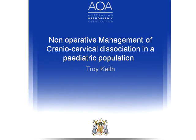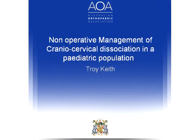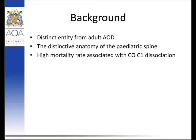I'll go through our experience over the past 20 years with this injury pattern. There's no conflict of interest. As mentioned previously, it's a distinct entity from adult injury. It's related to the distinctive anatomy of the pediatric spine, due to the undeveloped ligamentous structures, musculature, and disproportion between the head size and neck size. There is a high mortality associated with this dissociation.